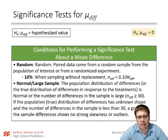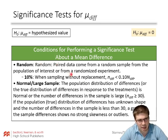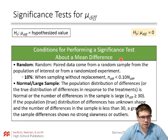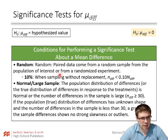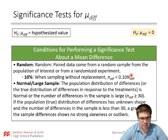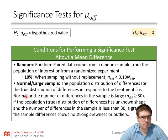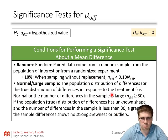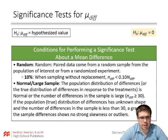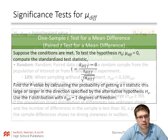Conditions are the exact same as the last section. Random: the paired data come from a random sample of the population of interest or from a randomized experiment. 10%: the number of differences or number of pairs is less than 10% of all potential differences. Normal/Large Sample: the population distribution of differences is either normal — which we won't likely know — or the sample size is large. If not, we graph our data and check for no major skew or outliers.